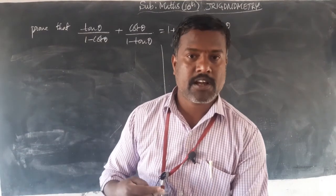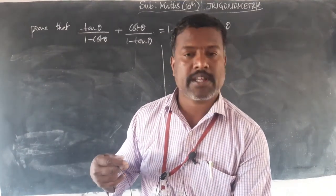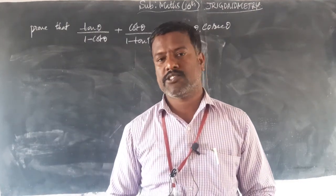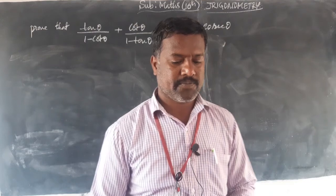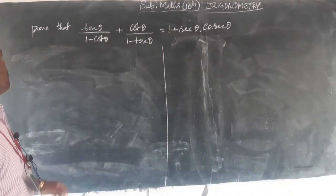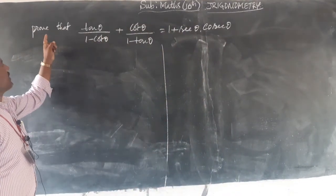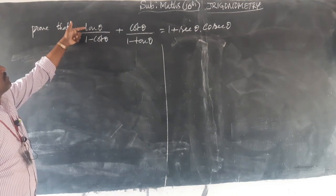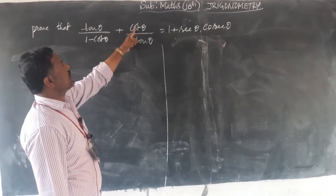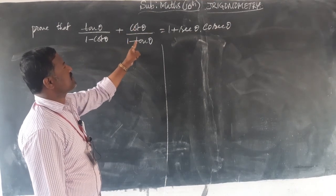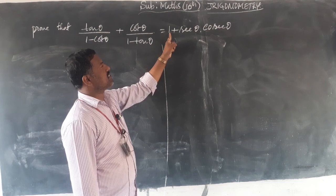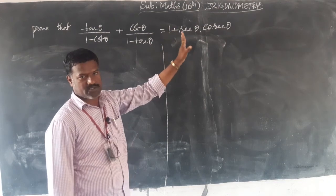Hello students, you are welcome to the 20th period class on 10th standard mathematics, a very important chapter — trigonometry. In trigonometry, I shall take up the problem: prove that tan θ/(1 − cot θ) + cot θ/(1 − tan θ) = 1 + sec θ · cosec θ.